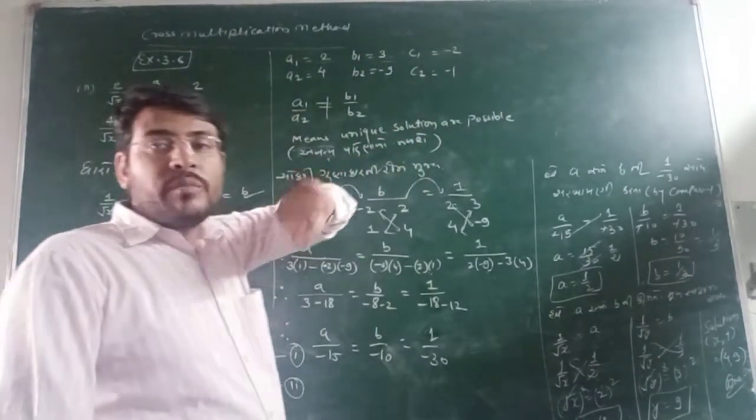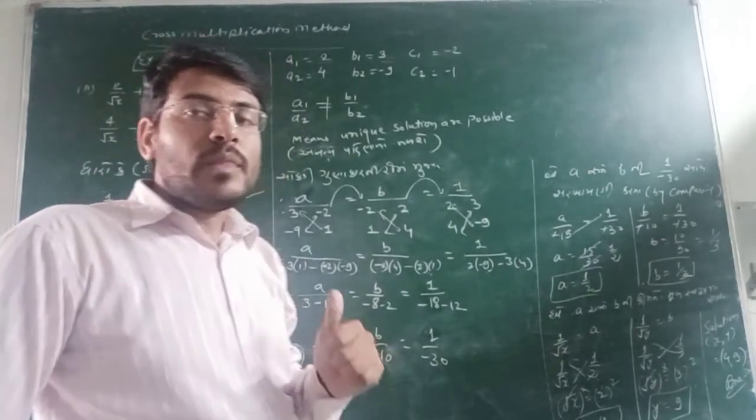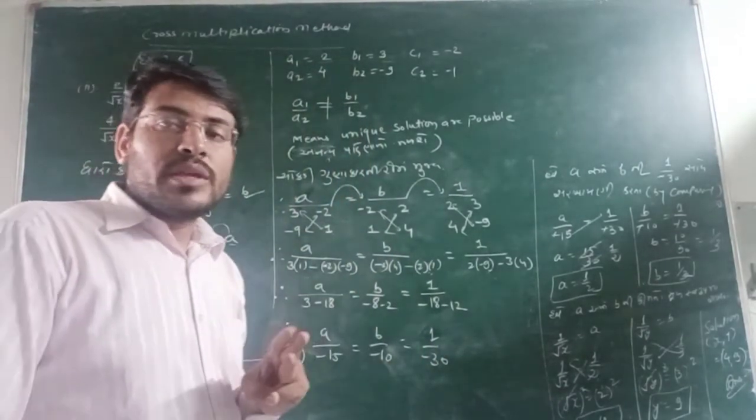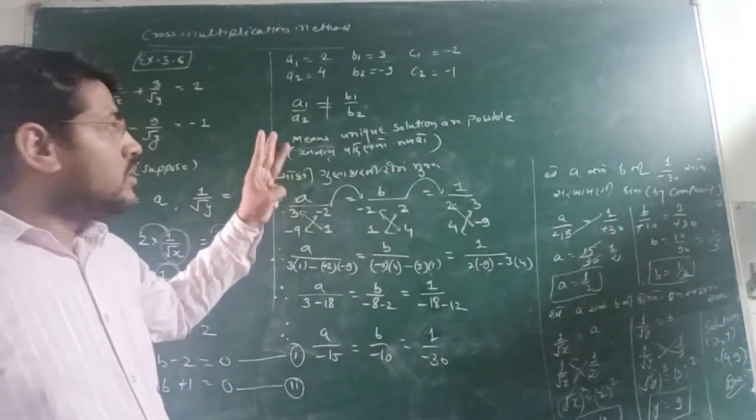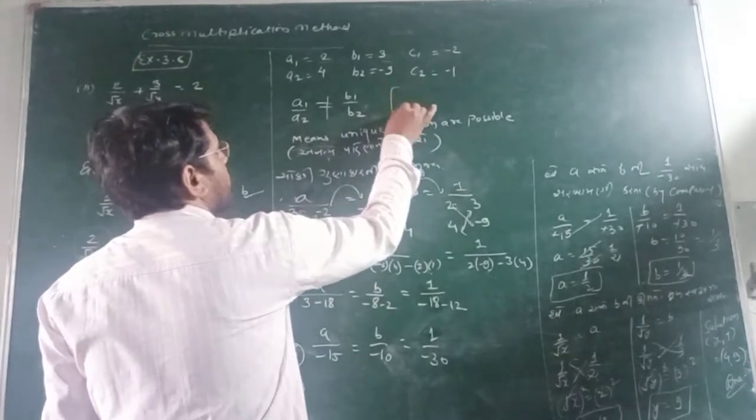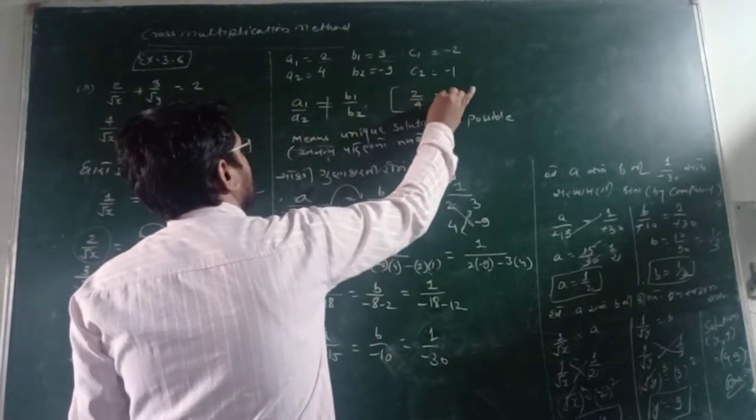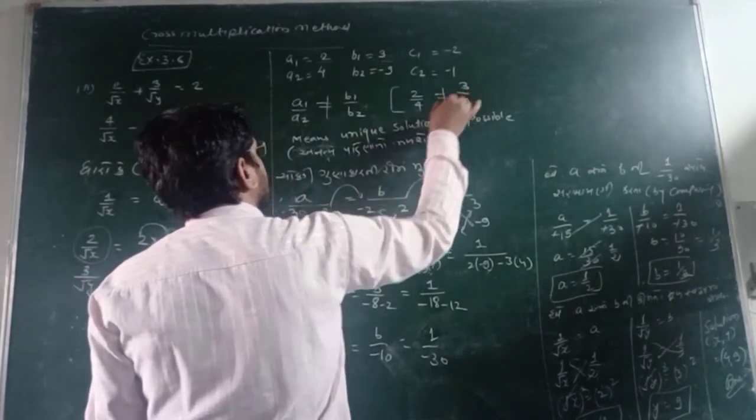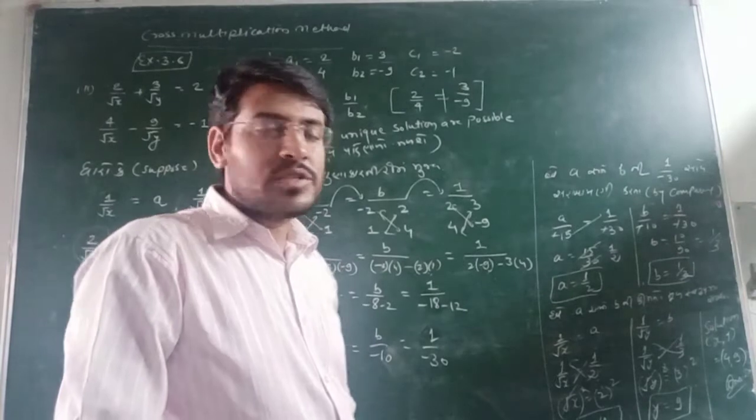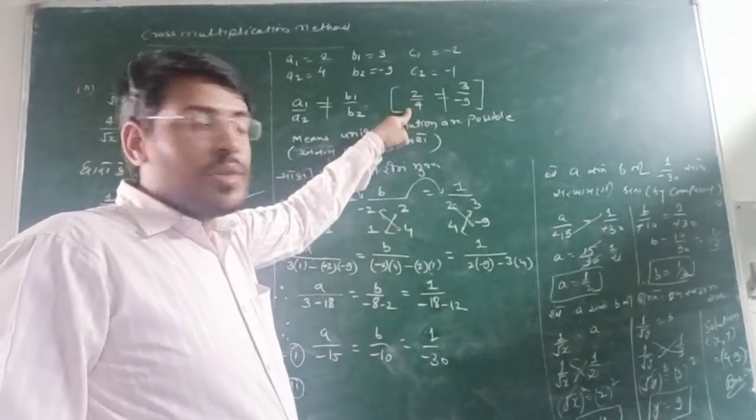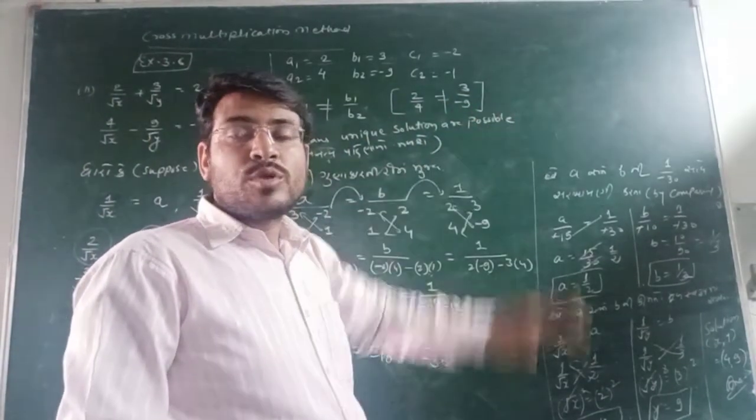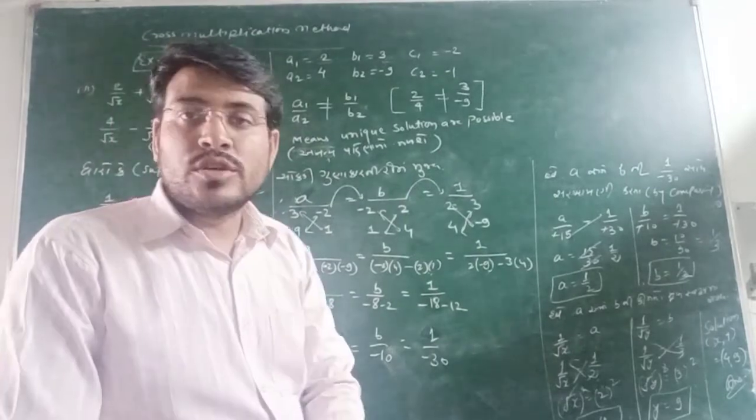we use the basic fact which we have discussed in previous sum I have posted on YouTube you can see over there that if A1 upon A2 is not equal to B1 upon B2. How we can come over here: we can see that your A1 upon A2 is 2 upon 4, while your B1 upon B2 is 3 upon minus 9. You can see both are not same. 2 upon 4 is 1 upon 2, and this is 1 upon negative 3. This is in the plus form while this is in the negative form, so both are not same, so it can be said